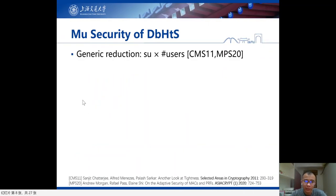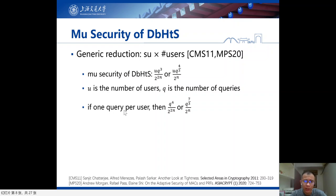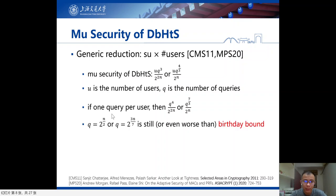If we use the naive reduction from single-user security to multi-user security — that is, we simply multiply the single-user bound by the number of users — then the multi-user security of DBH MACs becomes something like u·q to the power 3 over 2 to the power 2n, or u·q to the power 4/3 over 2 to the power n. Here u is the number of users and q is the number of queries. If the adversary issues one query per user, then the bound becomes q to the power 4 over 2 to the power 2n, or q to the power 7/3 over 2 to the power n. Then q is at most 2 to the power half-n, which is still at or even worse than the birthday bound. So the security loss of this naive reduction is large.